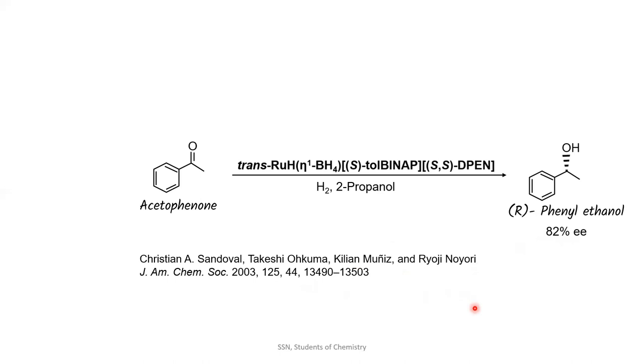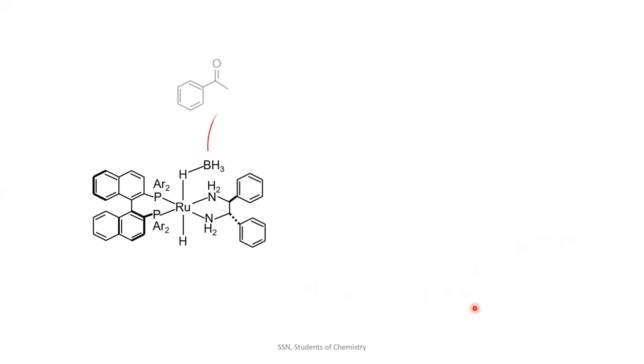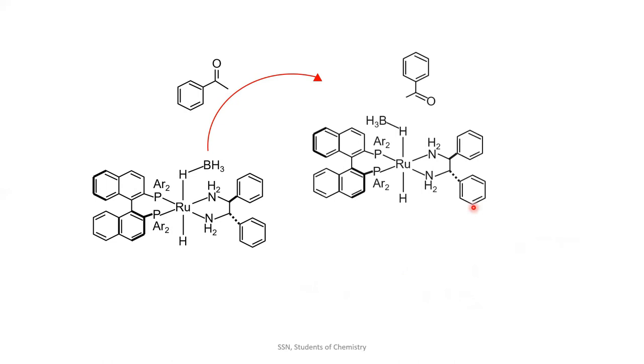This mechanism is so simple. Acetophenone reacts with our active catalyst like this. We know we can write the carbonyl group as C-plus and O-minus, right?